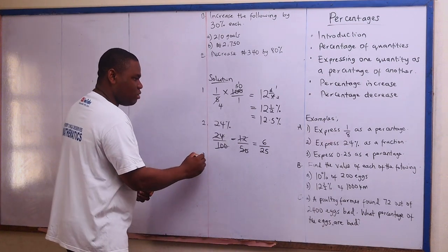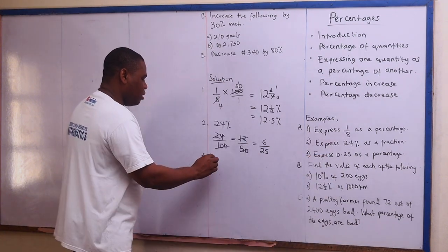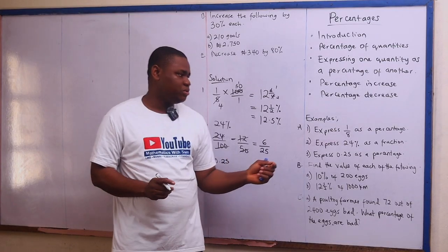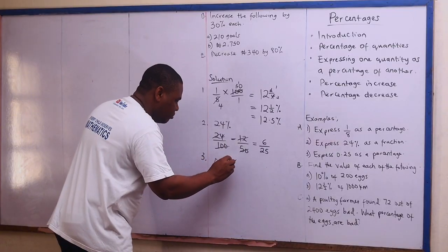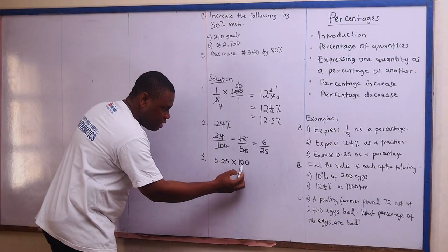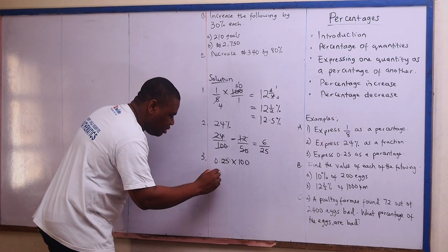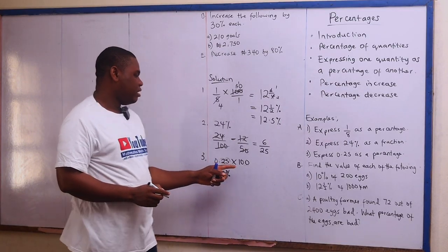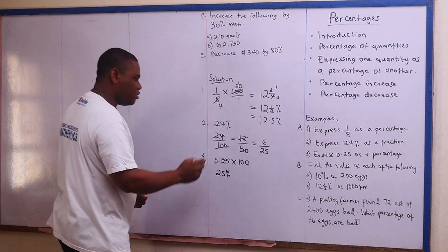The next one: express 0.25 as a percentage. It therefore means we have to multiply 0.25 by 100. We move the decimal point two places, and this gives us 25 percent. So 0.25 as a percentage is 25 percent.